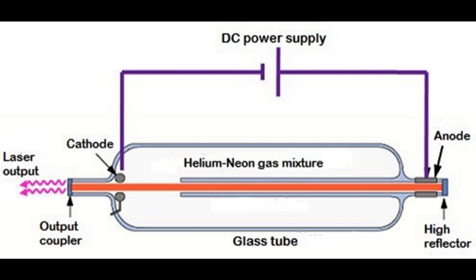In HeNe laser, neon atoms are the active centers and have energy levels suitable for laser transitions, while helium atoms help in exciting neon atoms. Electrodes — anode and cathode — are provided in the glass tube to send the electric current through the gas mixture. These electrodes are connected to a DC power supply.